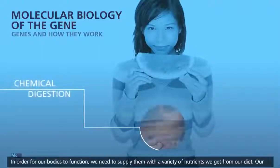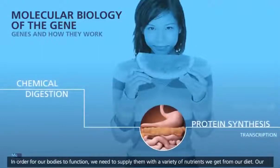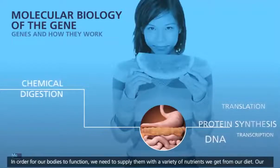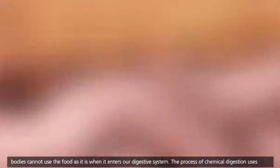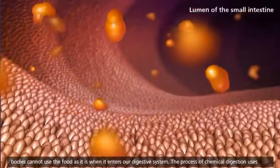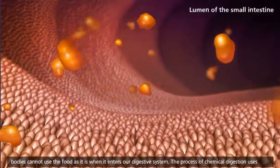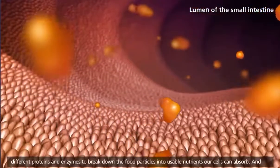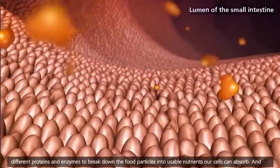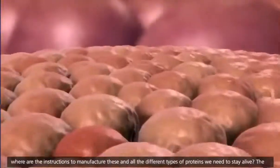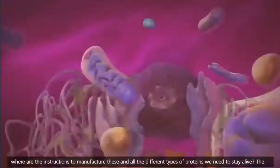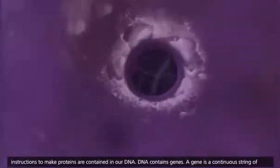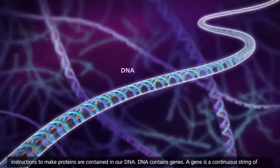In order for our bodies to function, we need to supply them with a variety of nutrients we get from our diet. Our bodies cannot use the food as it is when it enters our digestive system. The process of chemical digestion uses different proteins and enzymes to break down the food particles into usable nutrients our cells can absorb. And where are the instructions to manufacture these and all the different types of proteins we need to stay alive? The instructions to make proteins are contained in our DNA.